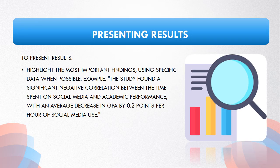When presenting the results in your abstract, emphasize the key findings using specific data where possible. Be concise, yet clear, ensuring the significant outcomes of your study are effectively communicated. For instance, 'The study identified a notable negative correlation between social media usage time and academic performance, revealing an average GPA decrease of 0.2 points per hour spent on social media.' This approach succinctly conveys the pivotal findings while maintaining clarity and relevance in your abstract.